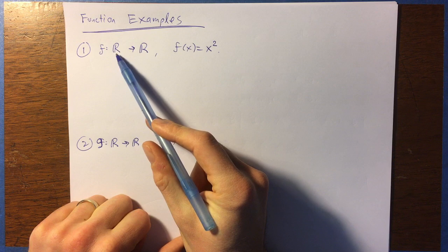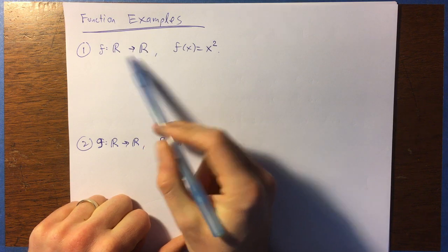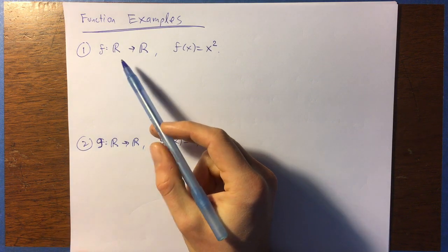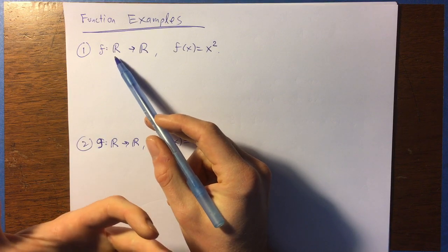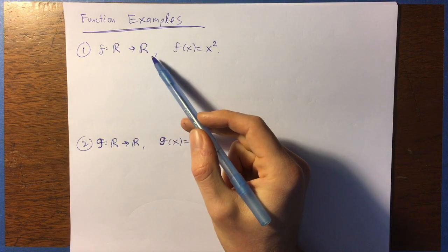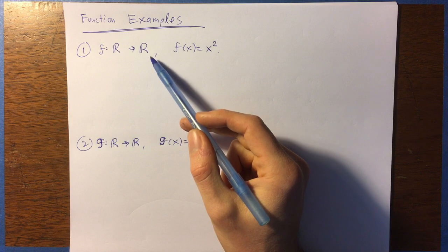Okay, so the domain and the codomain are kind of like, you can think of these almost as like data types. What type of input are we talking about? It's going to be a real number input. What type of output are we talking about? Well, it's going to be a real number output as well.